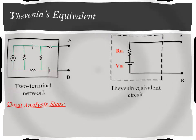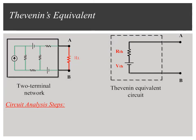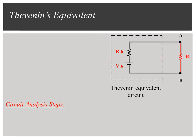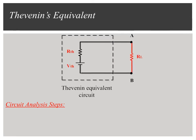Step 3: Connect the load resistor to the equivalent circuit, and find the current flowing through the load by using Ohm's law.